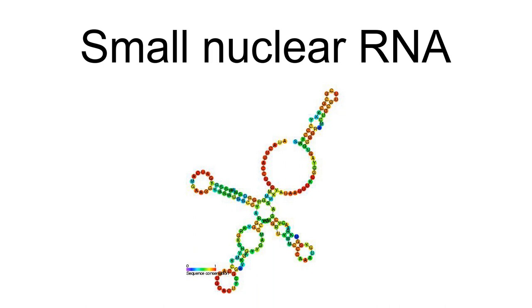Their primary function is in the processing of pre-messenger RNA, hnRNA, in the nucleus. They have also been shown to aid in the regulation of transcription factors (7SK RNA), RNA polymerase 2 (B2 RNA), and maintaining the telomeres.